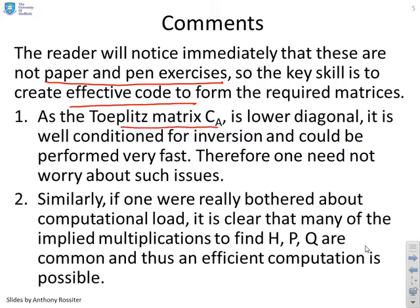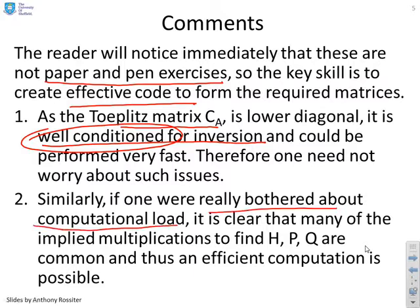As the Toeplitz matrix CA is lower diagonal and striped, it's well conditioned for inversion. If you wanted to, you could do some specific code to do the inversion of this, which was very fast. But the key thing is it's well conditioned, so you don't need to worry about whether the inversion will give you problems. If you are really bothered about computational load, it's clear that many of the implied multiplications to find H, P and Q are actually common. You can do this very efficiently if you need to. But for most users, what you're interested in is transparency of the code and getting the right answer less so in the computational load.